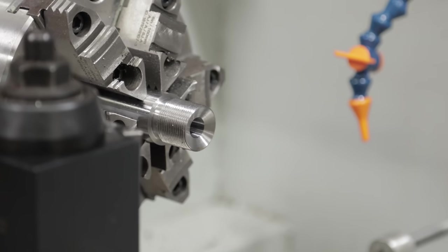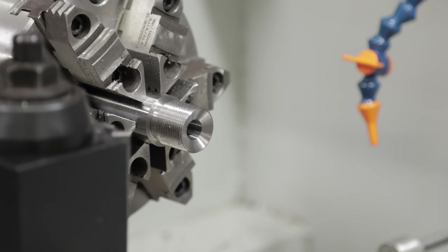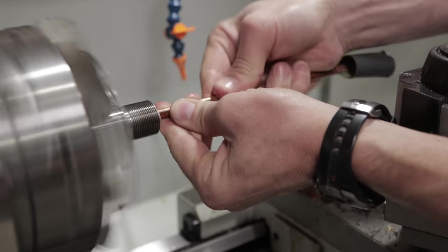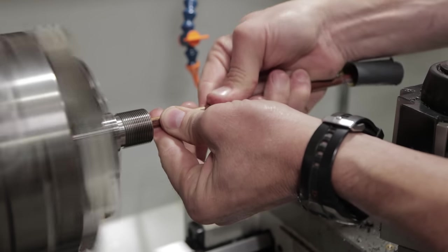We've got our threads, we've got our shoulder, we've got the cone breech, the chamber, the throat. It was just a matter at this point of taking some sandpaper and polishing things and knocking off some edges.